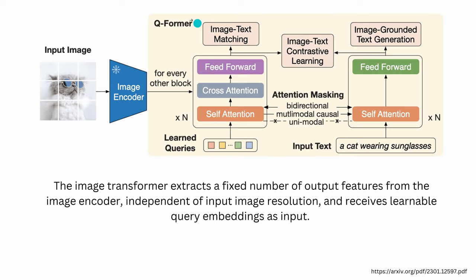To visualize this: we dock our Q-Former to the frozen image encoder in the first pre-training step. Within the Q-Former, we have an image transformer and a language transformer. On the self-attention layer there is weight sharing, which is the main idea. The image transformer extracts a fixed number of output features from the image encoder — independent of image resolution — and receives learnable query embeddings as input.